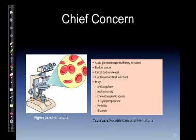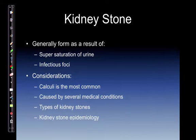Bladder cancer. Calculi or kidney stones. Cystitis or urinary tract infection. Drugs like anticoagulants, aspirin toxicity, or chemo drugs like cyclophosphamide. Penicillin and rifampin can also cause hematuria. Kidney stones generally form as a result of supersaturation of the urine, and it's an infectious foci.